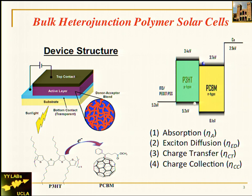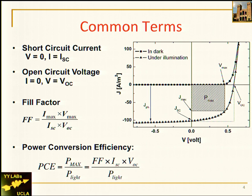One material is C60 PCBM, invented by Professor Fred Wudl, and the other is P3HT. When you mix these two materials you create the bulk heterojunction in a very nice phase-separation regime. The top and bottom contact structure is very similar to organic LEDs. This is a typical IV curve showing the dark and light response of a solar cell. The short-circuit current is the current at zero bias, and the open-circuit voltage is the voltage at zero current.